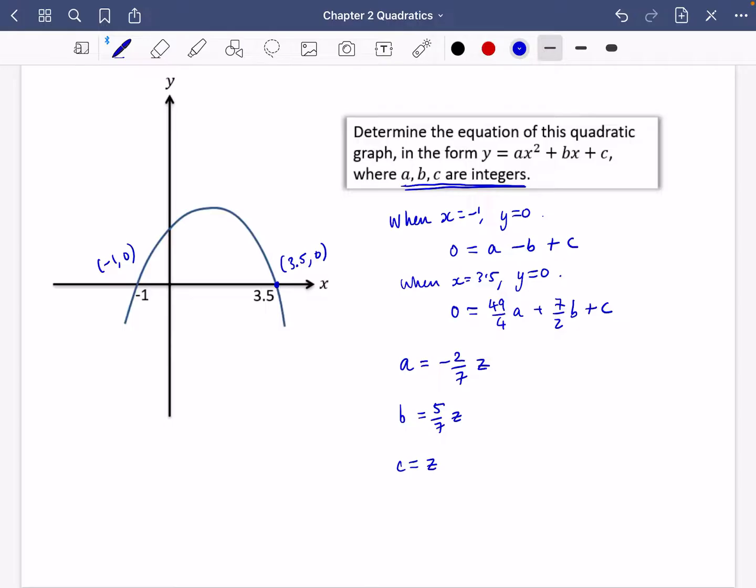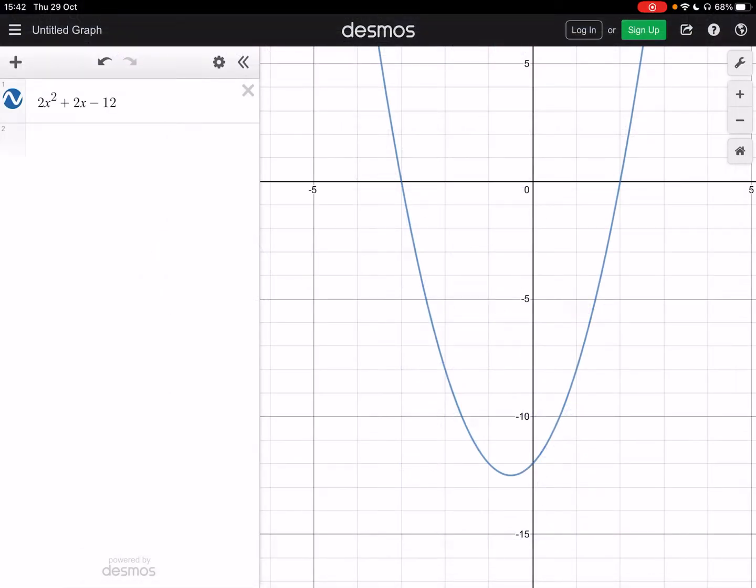And it wants it to be integers. So all I'm going to do is I'm going to let z equal 7 because that should get rid of all of these things here. So if z is equal to 7, c is equal to 7. a is equal to minus 2 over 7 times 7, which is minus 2. And b is equal to 5 over 7 times 7, which is just 5. So we think that the quadratic is just going to be minus 2x squared plus 5x plus 7.